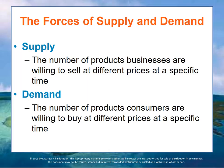To make this process easier across many different product lines, we use an exchange currency that measures value. In the United States, we use US dollars to measure this exchange value. The common currency simplifies the bidding and exchange process, balancing what is available — supply — with what people want — demand — across many different product lines. These forces of supply and demand in markets are used to allocate resources in countries like the United States and other free enterprise systems. Demand is the number of goods and services consumers are willing to buy at different prices at a specific time. Supply is the number of products that businesses are willing to sell at different prices at a specific time.